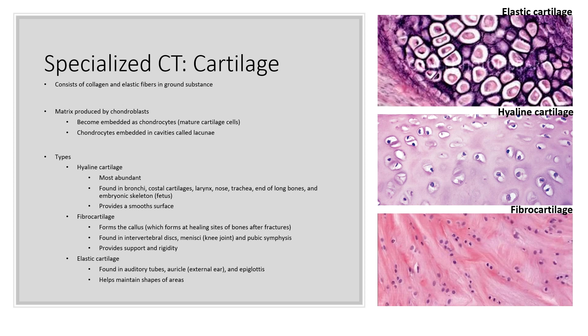Fibrocartilage forms the callus at a healing site after a bone fracture. It's also found in the intervertebral discs, your knee joint, and the pubic symphysis, and it functions in providing support and rigidity. Elastic cartilage helps maintain the shape of areas — you can find this in your auditory tubes, the external ear (called the auricle), and also your epiglottis.